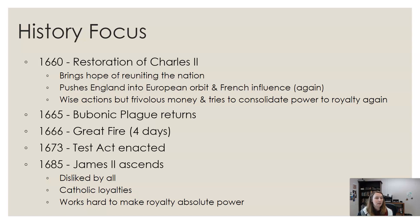By 1685 James II ascends. He is not liked by anybody and has no support from anyone. He is very loyal to Catholics and doesn't try to hide it like Charles II did — he fills his court and the government with Catholics, which goes against the Test Act. He wants absolute power for royalty, and then he has a son, which makes everyone scared that there's going to be another Catholic dynasty.